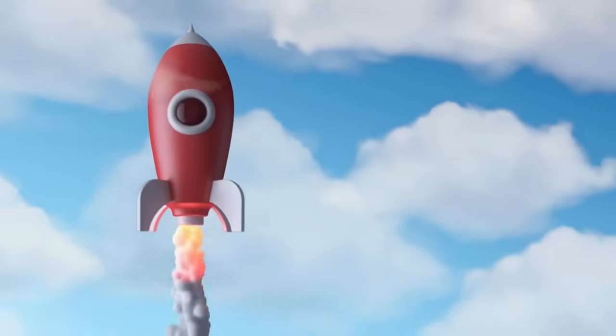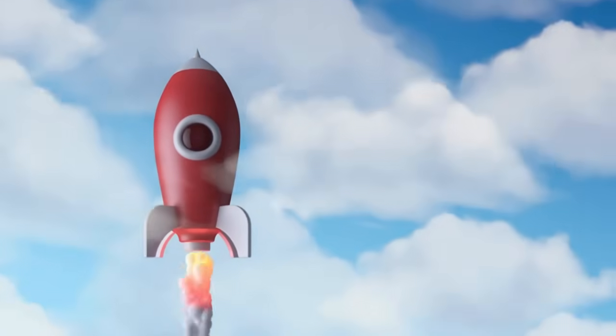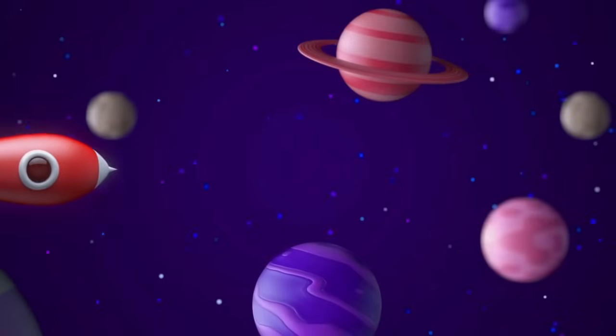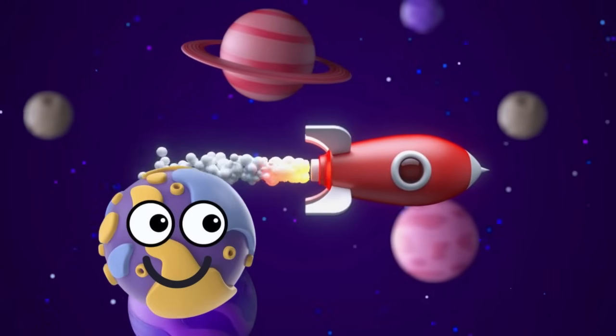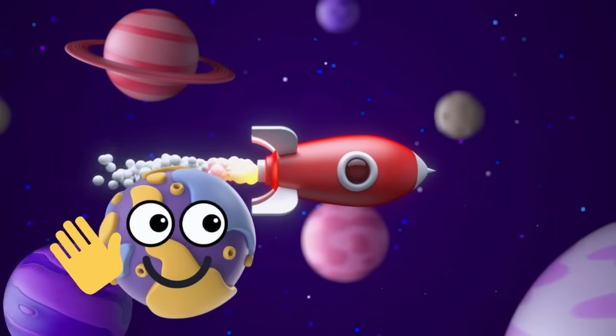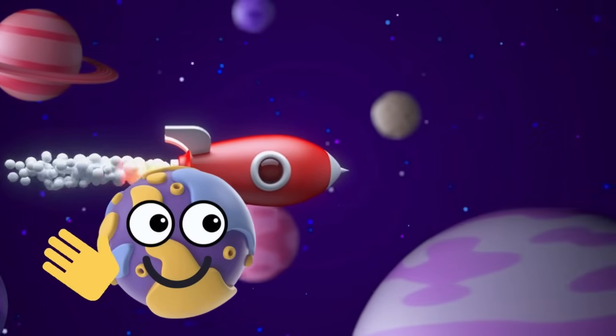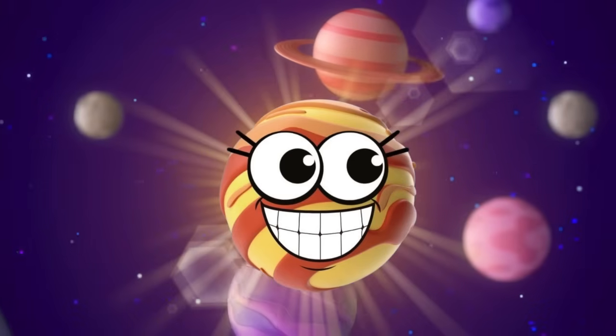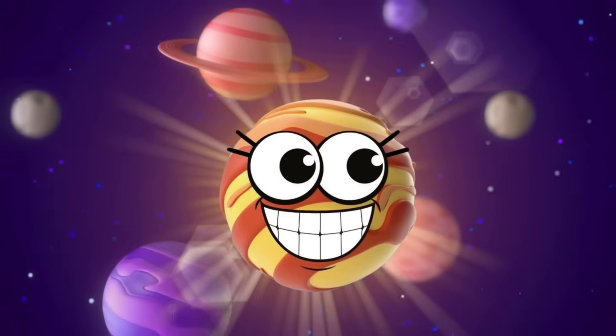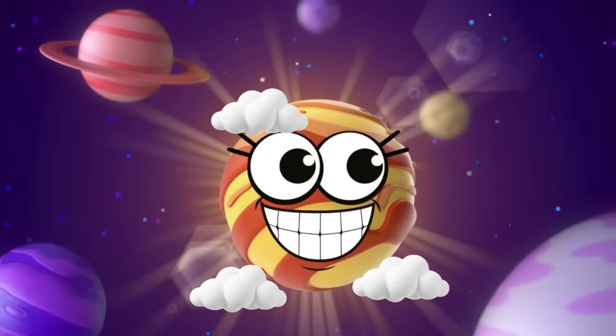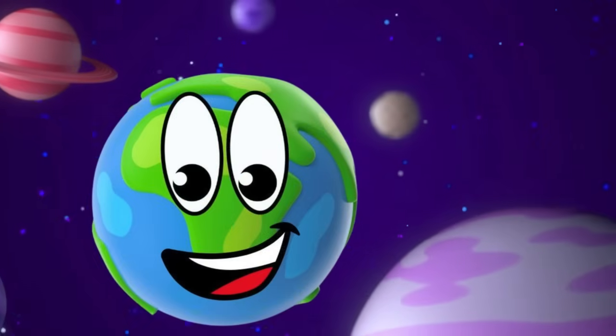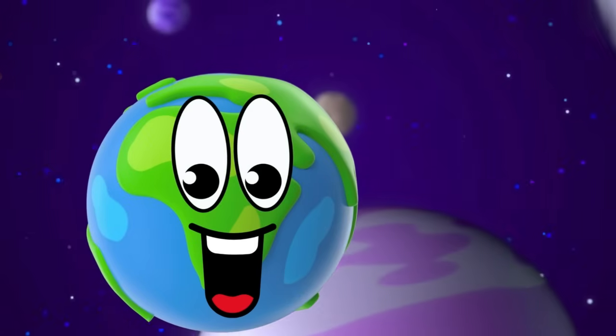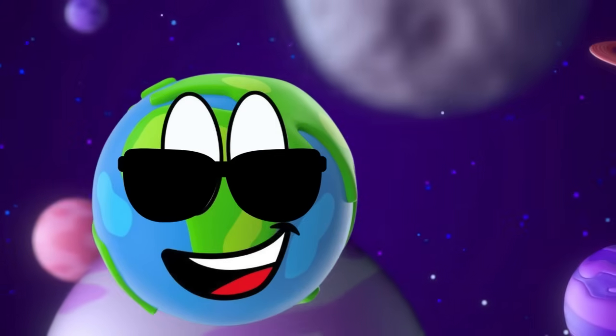Let's take a trip way out in space, past the clouds we're in a race. First comes Mercury, small and fast, closest to the sun, zooms right past. Next is Venus, shining bright, covered in clouds, a golden light. Then comes Earth, our home so blue, with oceans deep and skies so true.